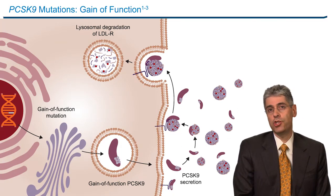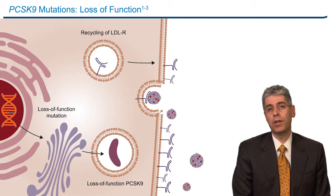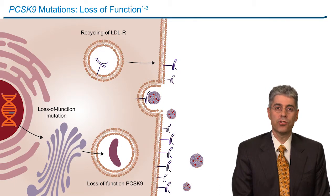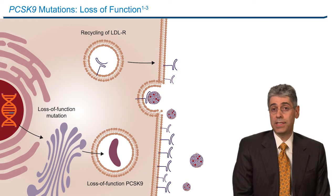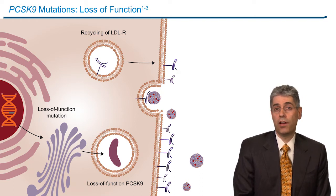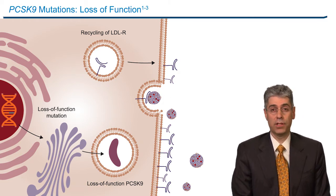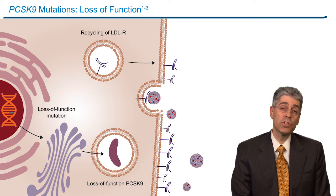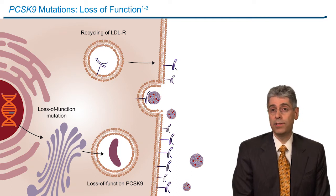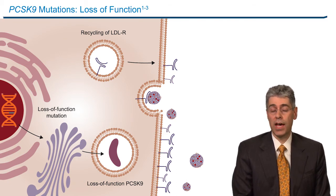Now you can imagine, if that's the case for a gain-of-function mutation, what would happen in reverse? What would happen if someone had a loss-of-function mutation? In that case, it'd be the exact opposite — they would have more LDL receptors free to recycle to the surface of the liver. Those receptors could clear more LDL out of the circulation, and those patients should be protected from cardiovascular disease. That was the hypothesis.